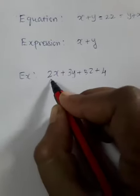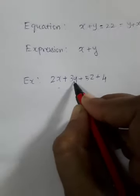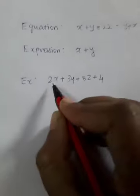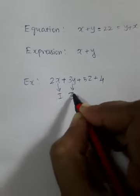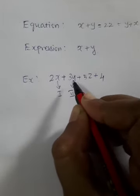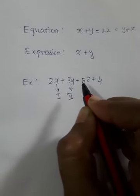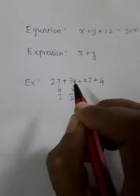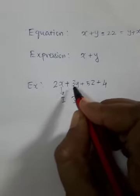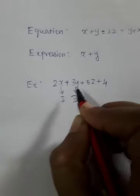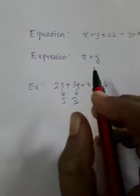Look at 2x plus 3y — here we have a plus, so these two are different terms. 2x is term 1, and 3y is term 2. 3y is nothing but 3 into y, but you cannot say both are different terms; 3y is a single term. Only when you have plus or minus can you split the terms. With multiplication or division you cannot consider them as different terms.